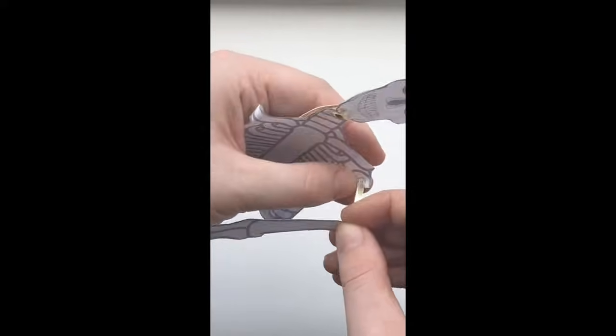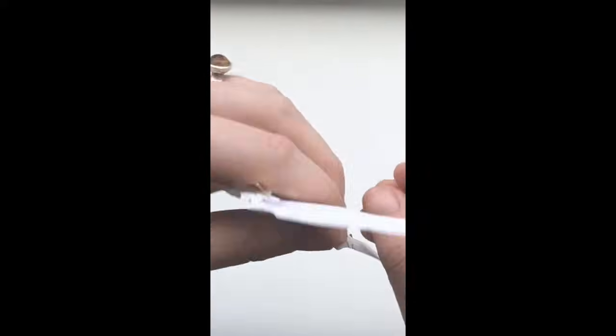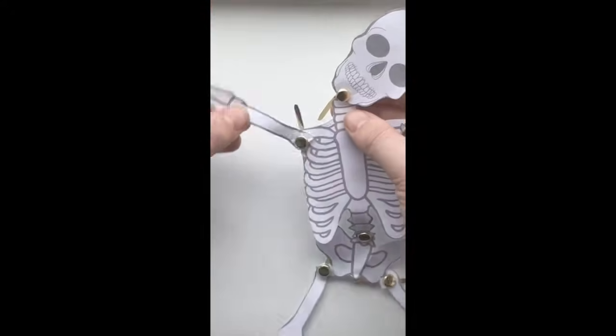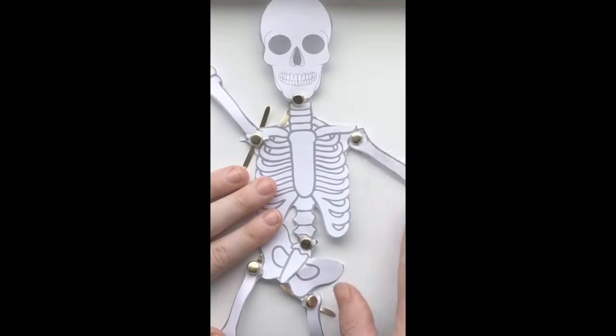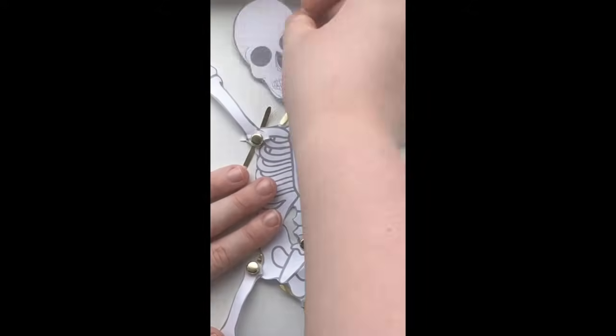Once your skeleton is finished, it's a brilliant way to start learning about joints. This is a really fun game. Get your child to move a part of the skeleton, and then move it on their own body. This is a great way to help children understand the way a skeleton moves.